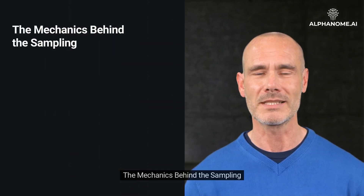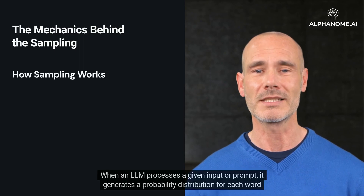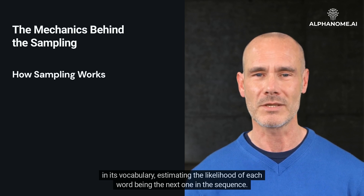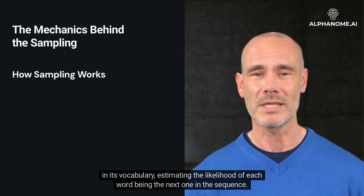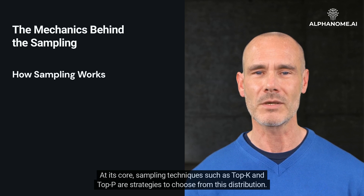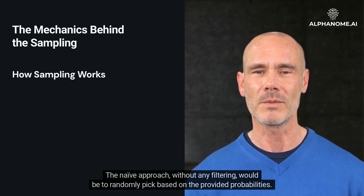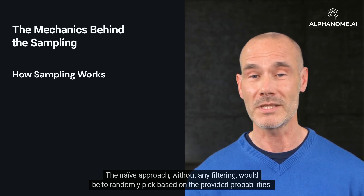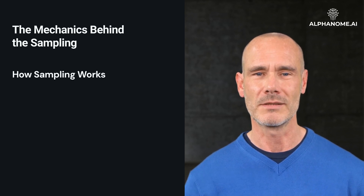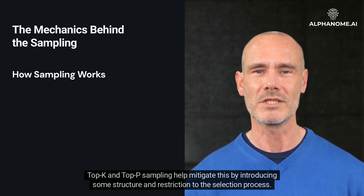The mechanics behind the sampling — how sampling works. When an LLM processes a given input or prompt, it generates a probability distribution for each word in its vocabulary, estimating the likelihood of each word being the next one in the sequence. Sampling techniques such as Top K and Top P are strategies to choose from this distribution. The naive approach, without any filtering, would be to randomly pick based on the provided probabilities. However, this can often lead to erratic and nonsensical results. Top K and Top P sampling help mitigate this by introducing some structure and restriction to the selection process.